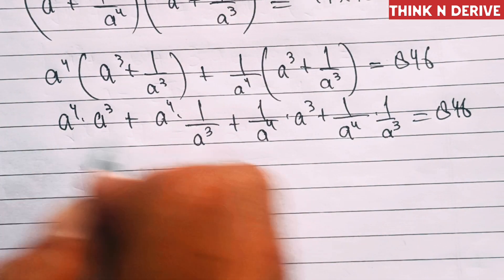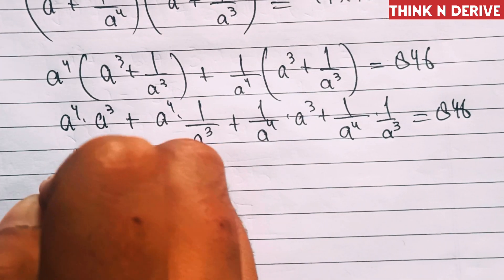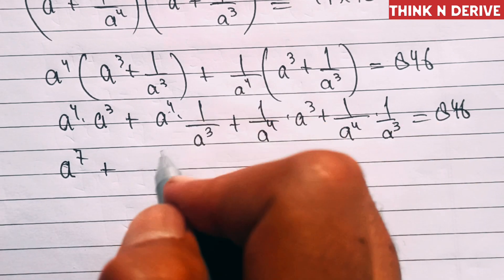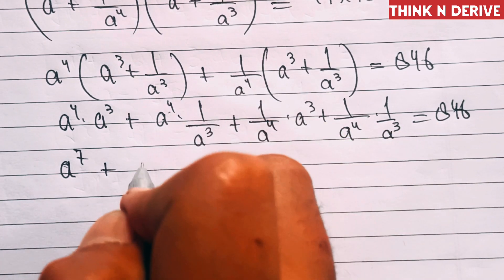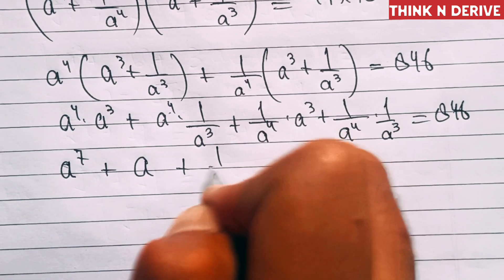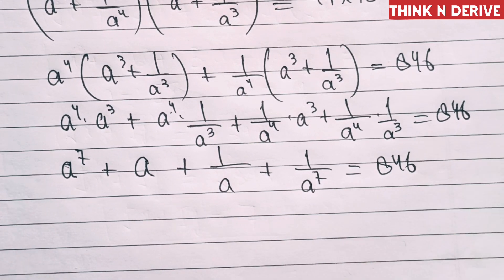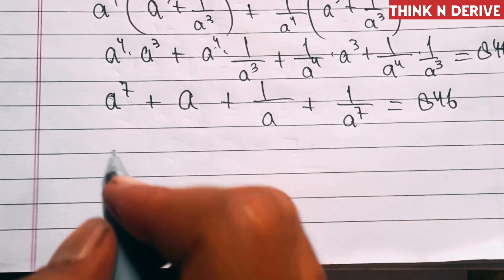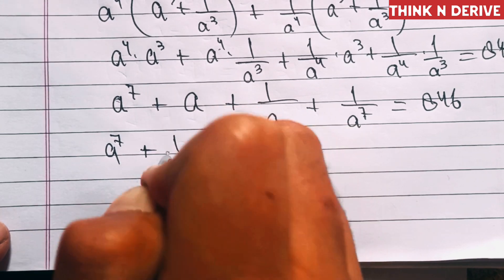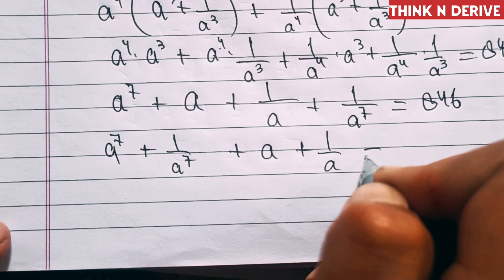Simplifying each term using the rule of adding exponents with the same base: a⁴·a³ = a⁷, a⁴/a³ = a¹ = a, a³/a⁴ = 1/a, and 1/a⁴·1/a³ = 1/a⁷. So the expansion becomes a⁷ + a + 1/a + 1/a⁷ = 846.